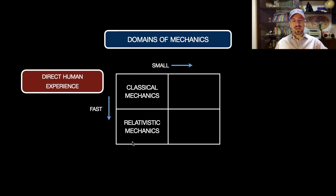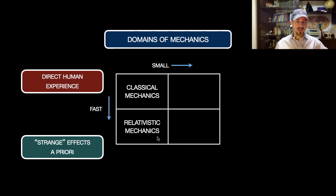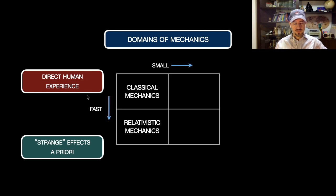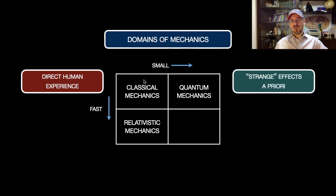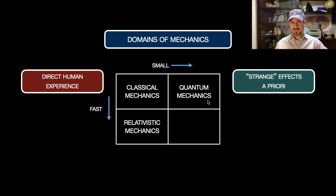When you go from classical mechanics to the description of motion of objects with higher and higher velocities comparable to the velocity of light in vacuum, you are under the domain of relativistic mechanics or special relativity, and strange effects — at least a priori — appear. These effects are strange because they are not based on our direct experience. When you go from classical mechanics to the description of small objects under the atomic scale, you have quantum mechanics.